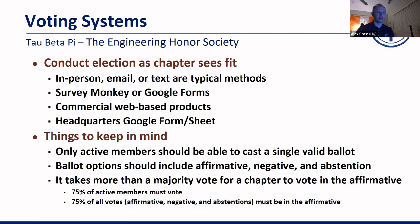Ballot options should include affirmative, negative, and abstention if you're sending out the ballot and it's not a present vote. It takes more than a majority vote for a chapter to vote in the affirmative — three-fourths of the active members must vote, and 75% of all votes — affirmative, negative, and abstentions — must be in the affirmative for a ballot to be ratified at the chapter level.